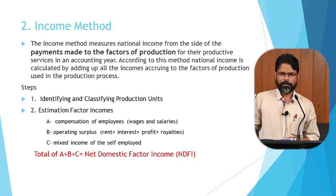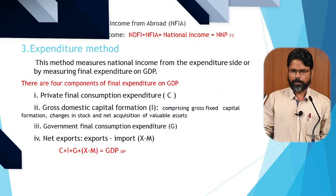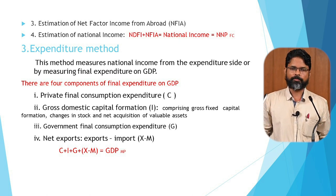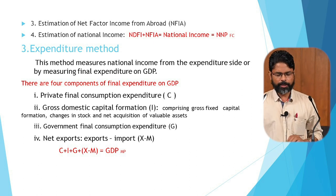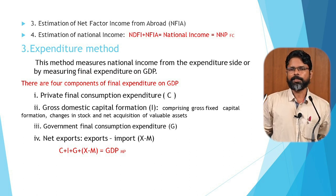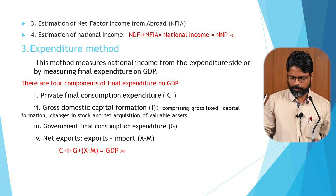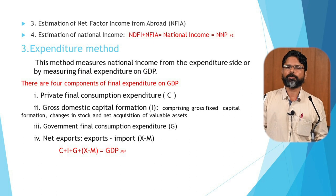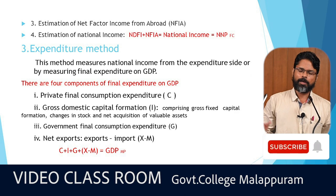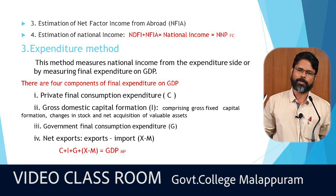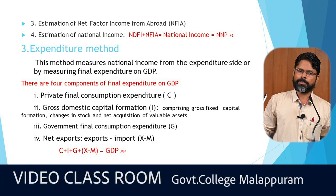Finding the net domestic factor income completes the second step. The third step is the estimation of the net factor income from abroad. The fourth step is estimation of national income: net domestic factor income plus net factor income from abroad gives the net national income, equal to the net national product at factor cost — the national income of the country. This value will be equal to the net national product at factor cost found using the value-added method.